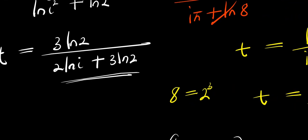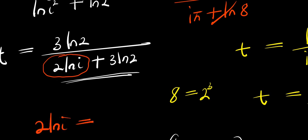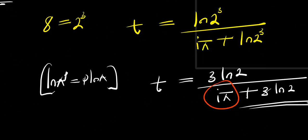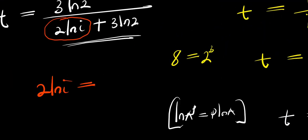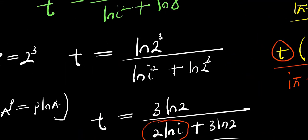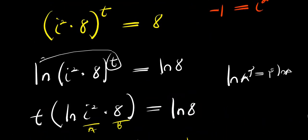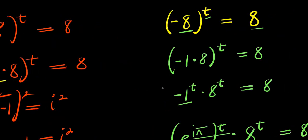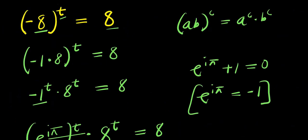Observing both results, we have 2 natural log i from the second method which corresponds to i times pi from Euler's identity in the first, confirming both answers are equivalent. Any of the two forms is correct. So guys, that is it. Goodbye.